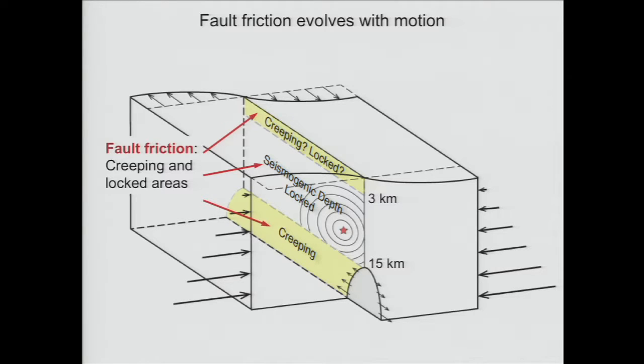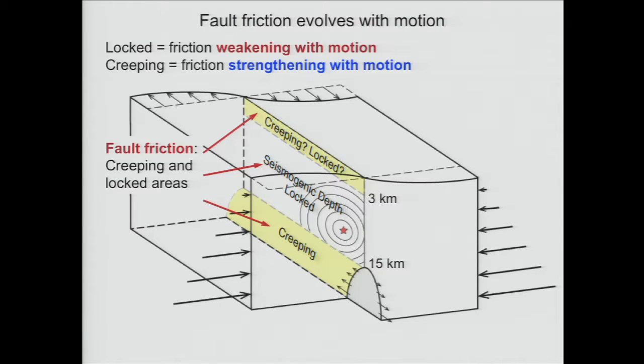How does it happen in the real system? Since we have these locked areas and these creeping areas, this is a key clue that friction indeed evolves with motion on real faults. In particular, locked portions are weakening with motion, and creeping portions are either not weakening or are strengthening with motion. This is our frictional property prediction.